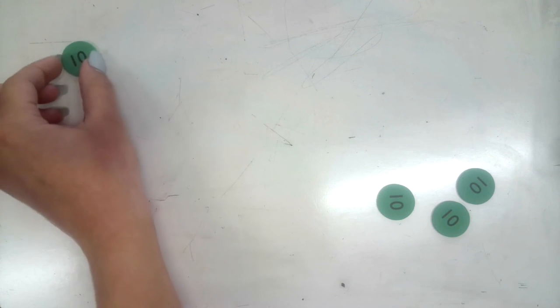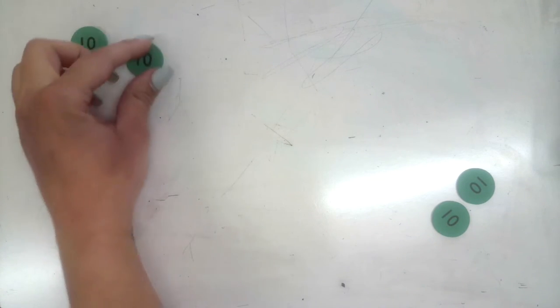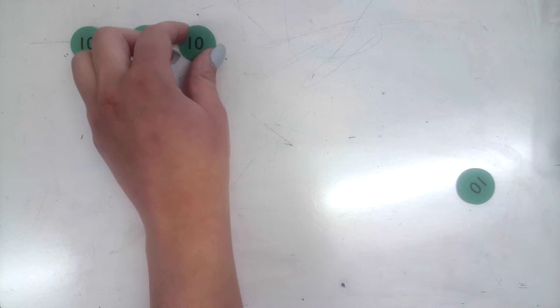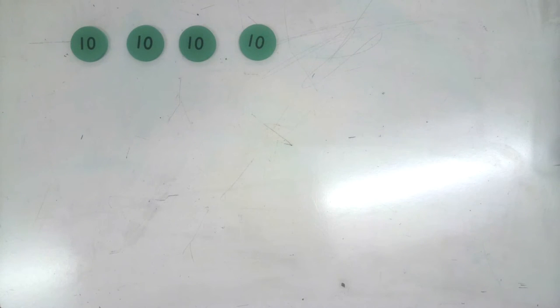We're going to start off with some connections here to what we already know, what we've already learned. So I have four tens here. What is a multiplication sentence that I can use to show the total value of these four tens?